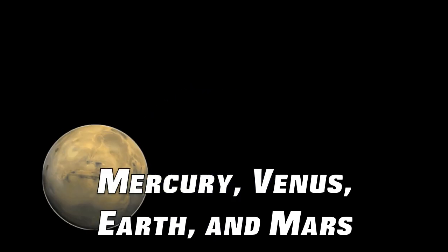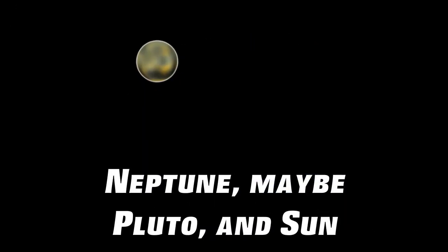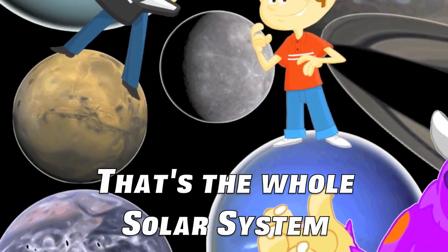Mercury, Venus, Earth, and Mars. Jupiter, Saturn, Uranus as far. Neptune, maybe Pluto, and Sun. That's the whole solar system.